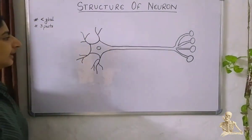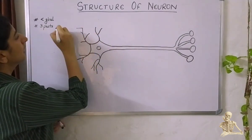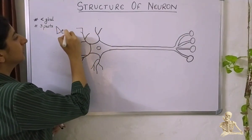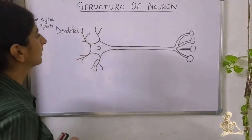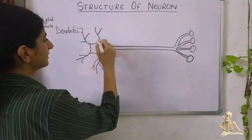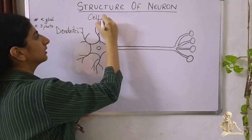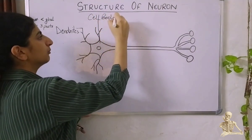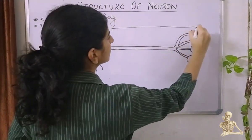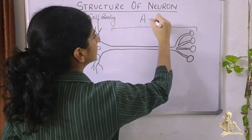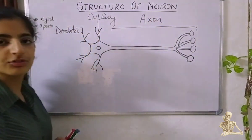In this diagram, these hair-like structures here are the dendrites. This region forms the cell body, and this entire portion is the axon of this neuron.